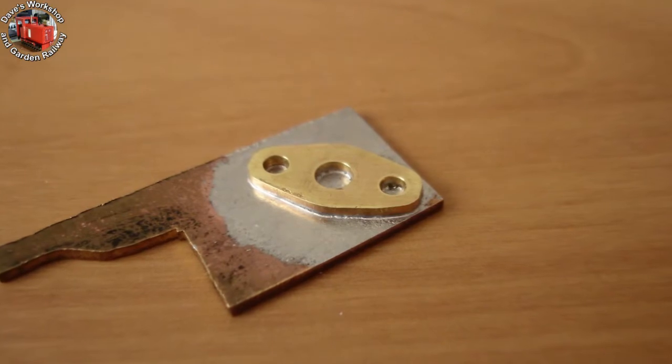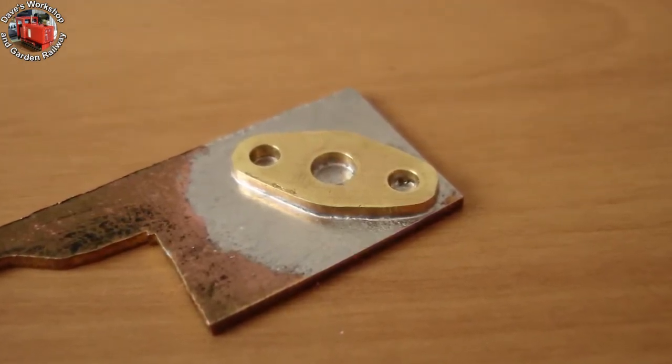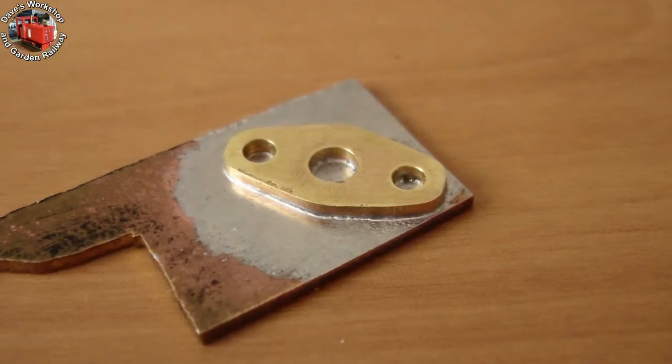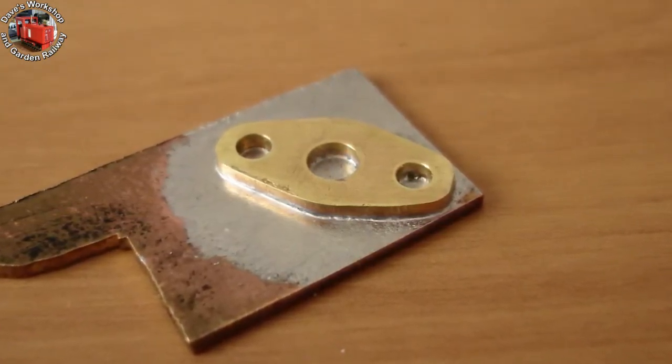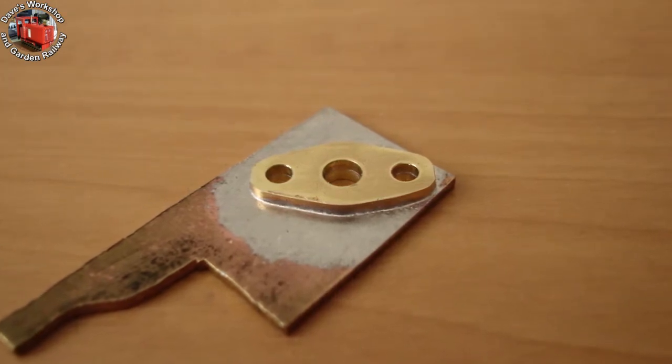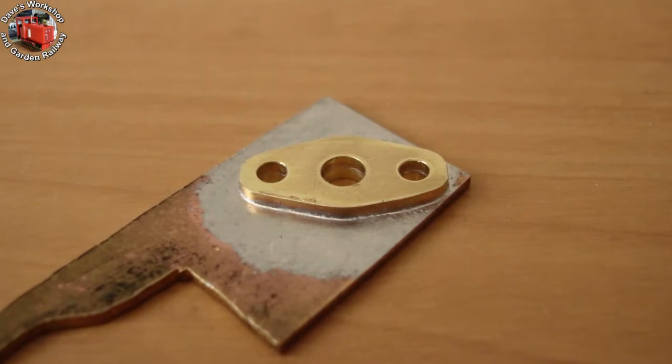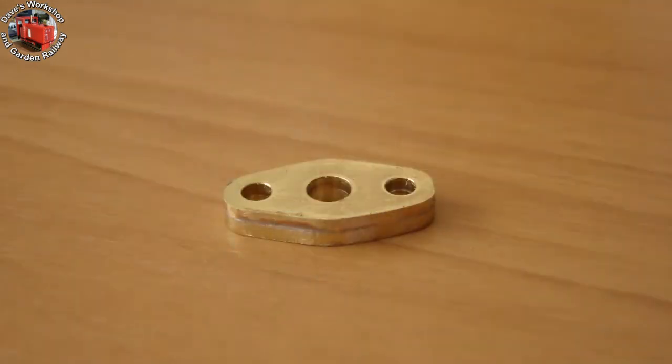After being happy with the shape of the first valve spindle gland cover, I use it as a template for making the second. It was solder-sweated onto another brass off-cut. The first thing was to drill through. Luckily the material was just thick enough to properly guide the one eighth drill. Sawn and filed to shape, whilst taking care not to disturb the original cover.